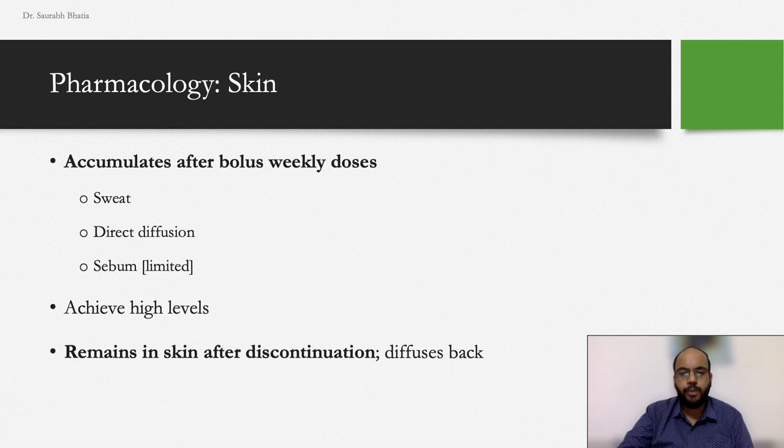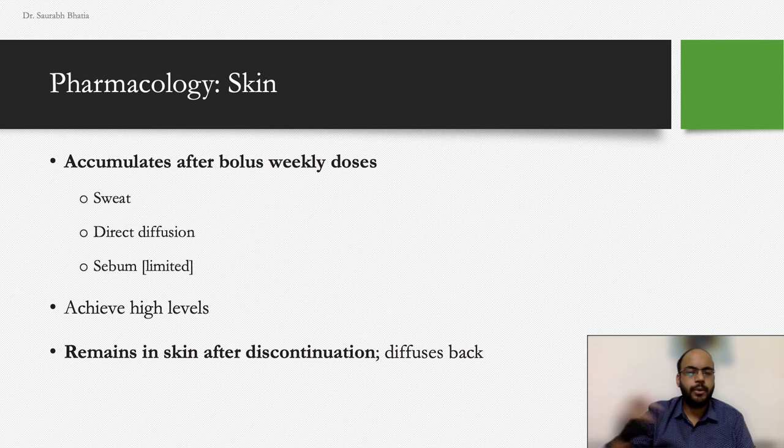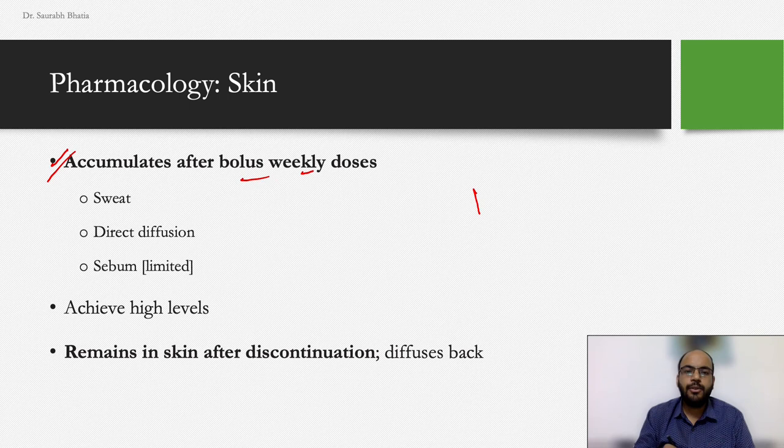As a member of the azole family, fluconazole interferes with ergosterol synthesis, which is essential for fungal cell membrane formation. In the skin, it accumulates after bolus weekly doses — various articles mention that a bolus dose of 150 mg per week leads to better skin accumulation.